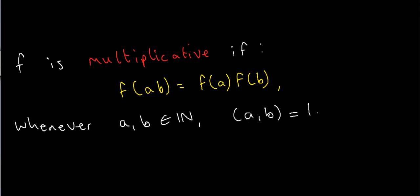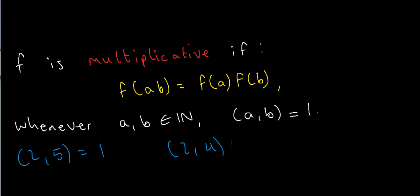When I write something like (a, b) in brackets equals 1, that means a and b are coprime integers — in other words, relatively prime, meaning they don't share any common factors. For instance, 2 and 5 are coprime because they don't share any common factors. But 2 and 4 are not coprime because they have a common factor of 2 — that is, their greatest common divisor is not 1, which we usually write as greater than 1.